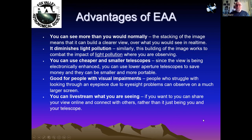Some advantages: you can see more than you normally would. Stacking images builds a clearer view over what you'd see in real time, especially for deep sky objects. It diminishes light pollution, allowing you to use cheaper and smaller telescopes since the view is electronically enhanced. It's also good for people with visual impairments who struggle looking through an eyepiece. And you can live stream what you're seeing — the Revolution Imager has a Wi-Fi feature to connect people's phones to your display.